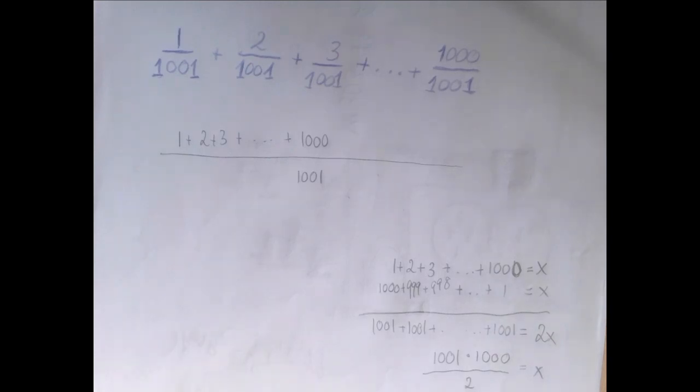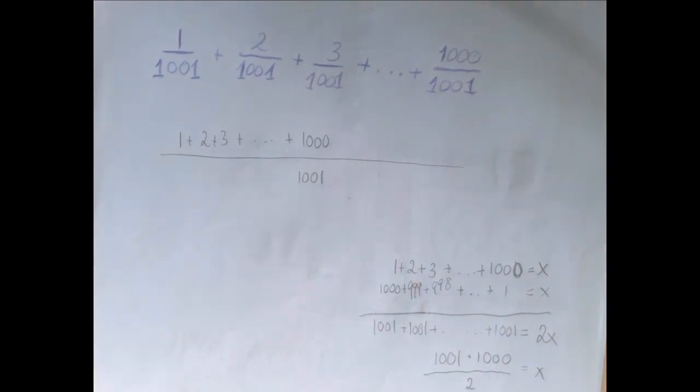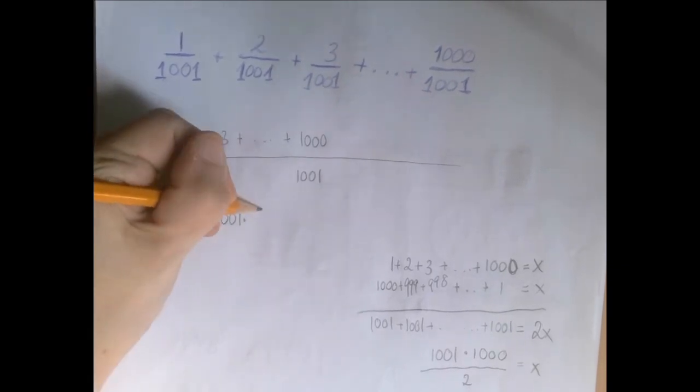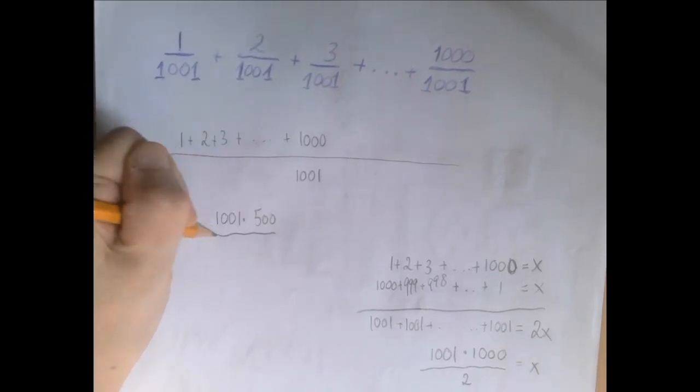So in this case looking at what the denominator is maybe we don't need to multiply this all out. How about thinking of x as 1001 times 500.